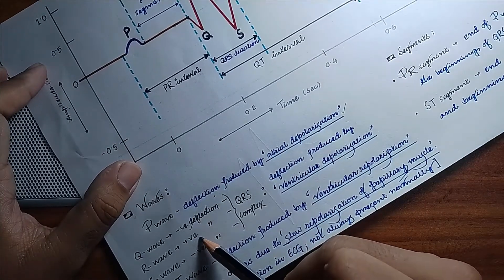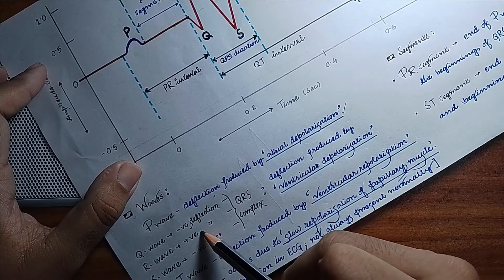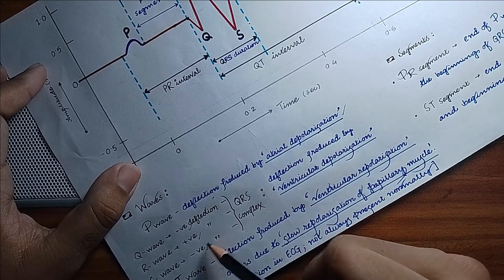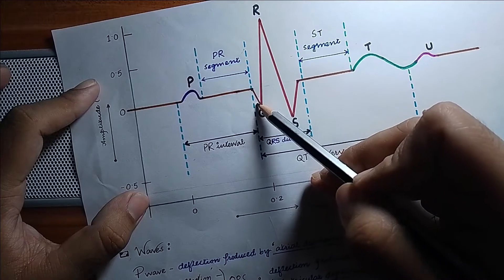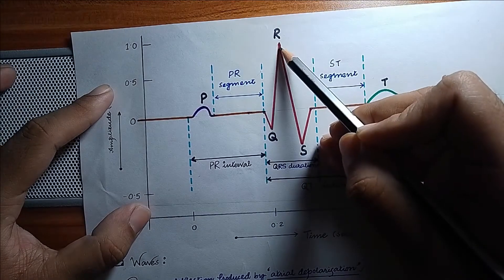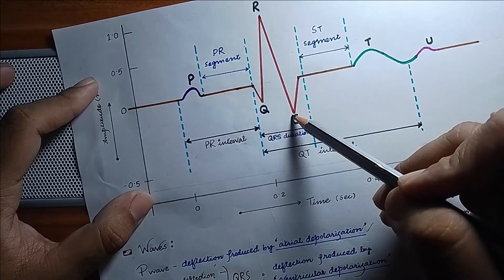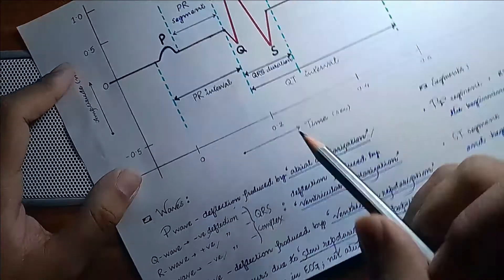Then R wave, which is a positive deflection, and then S wave, which is again a negative deflection. So it is negative, then positive, and then again negative. This Q, R, and S wave combines together and forms QRS complex.